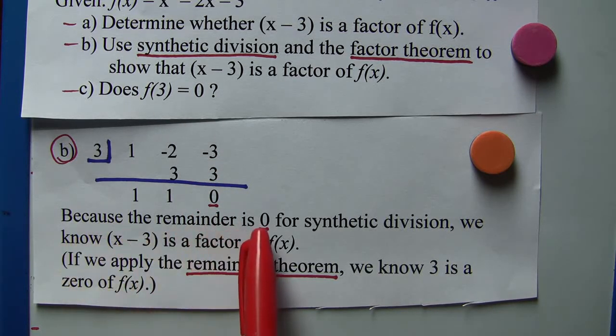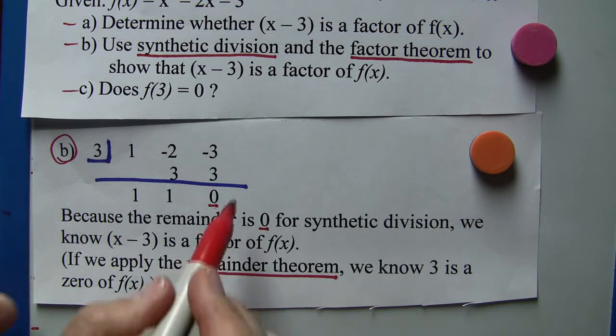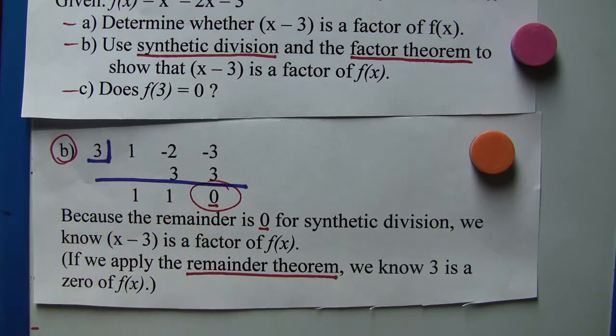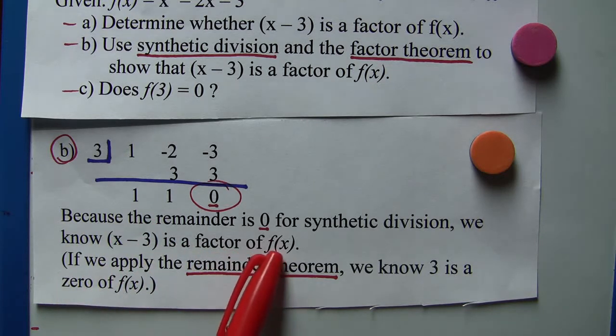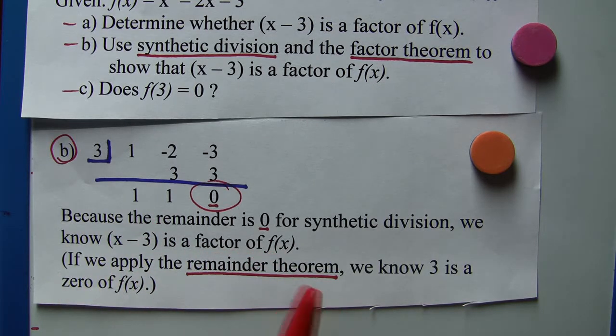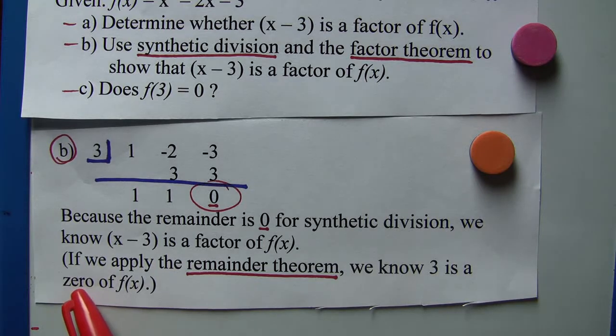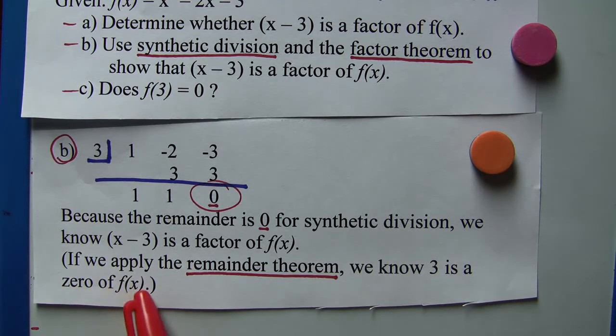Because the remainder is 0 for the synthetic division—that's right here, this is the remainder—we know that (x - 3) is a factor of f(x). Now, getting a little bit ahead of ourselves here, if we apply the remainder theorem, we know that 3 is a zero, or a solution, or a root of f(x).